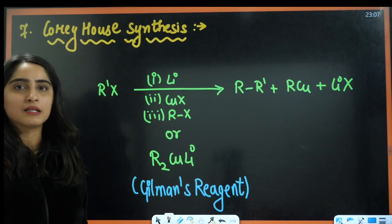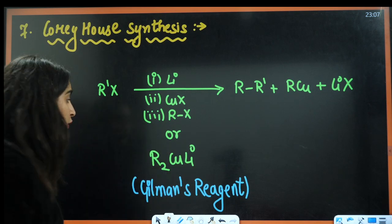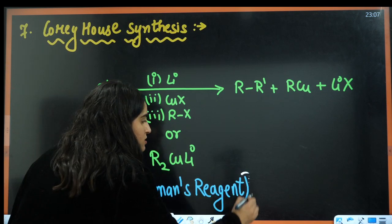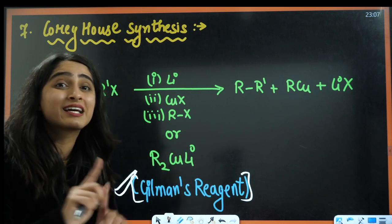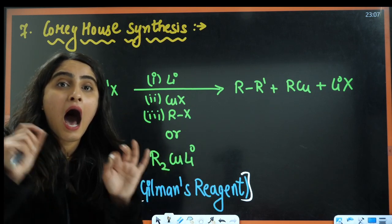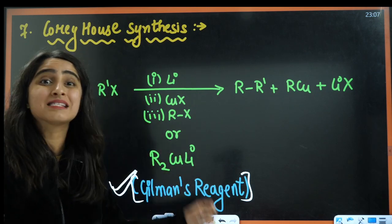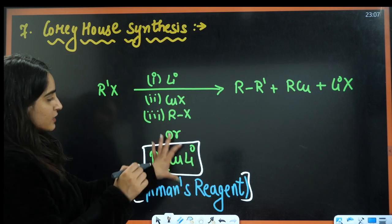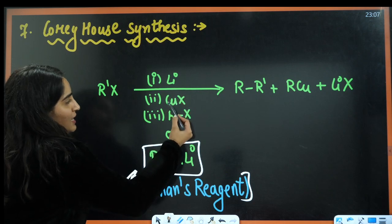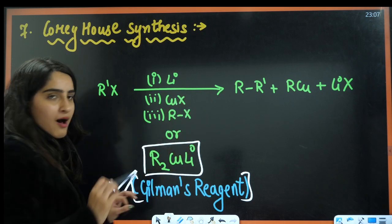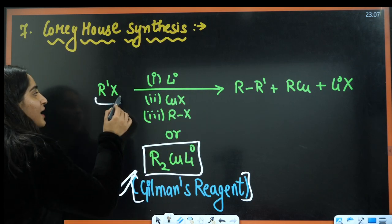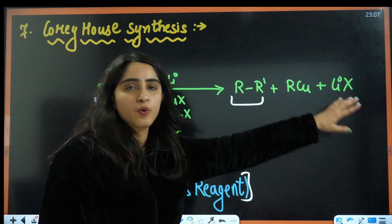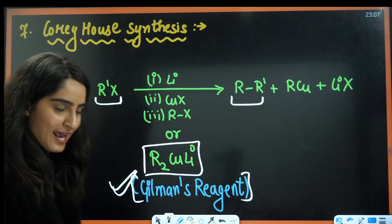Next is Corey-House synthesis, where we use Gilman's reagent — always remember this is an organometallic, not Grignard's reagent (RMgX). Gilman's reagent can also be written as Li₂CuR₂, or they can give LiCuX and RX. Here RX is getting converted into alkane, and the side products are RCu and LiX.